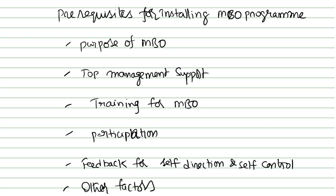What is the prerequisite for installing an MBO program? You cannot directly install these programs into the organization — there are certain prerequisites. For example, if you want to join graduation, the prerequisite is clearing the intermediate examination. Similarly, if you want to apply for a job, the prerequisite is that you must have finished your graduation. That is what we call prerequisites.